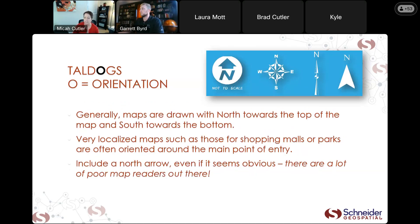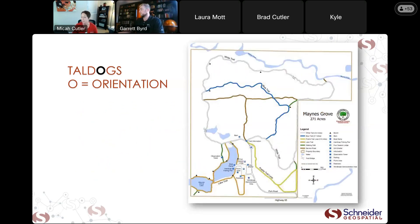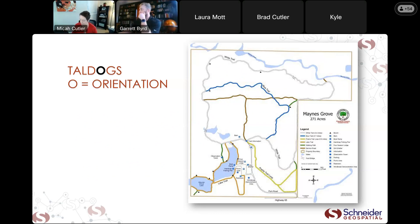Orientation — North arrow. North is almost always up, but not necessarily. There are a lot of poor map readers out there, so give them as much information as possible. I have an example here — this is a map of a property orientated the way they wanted it because of where the sign was at the entrance. The north arrow in the lower right shows north is actually going to the right of the screen, so north is not up in this example.